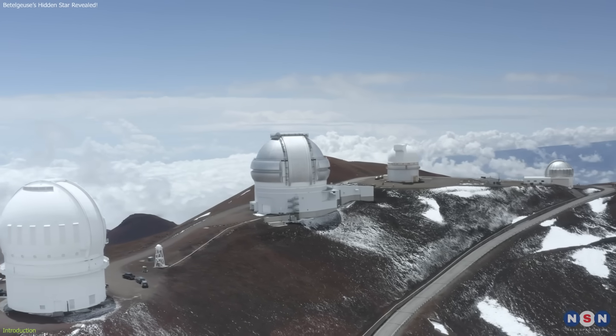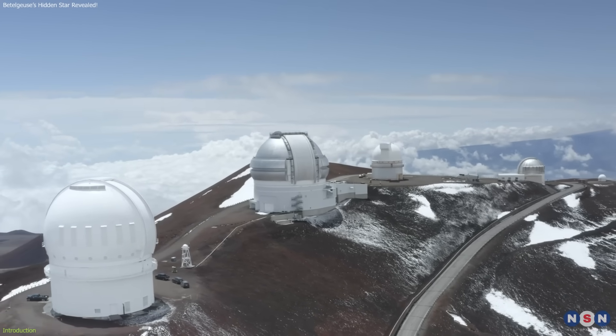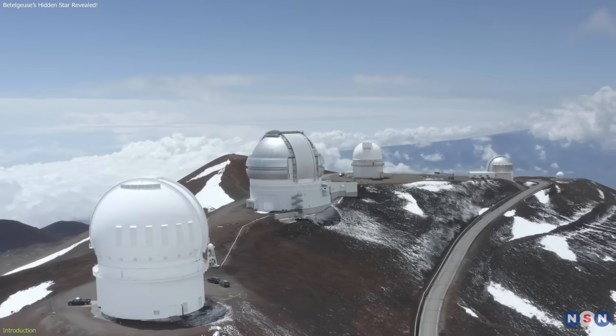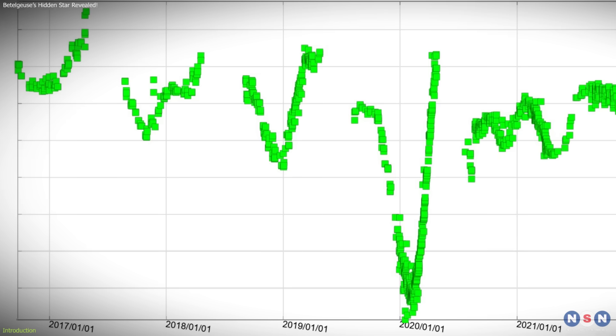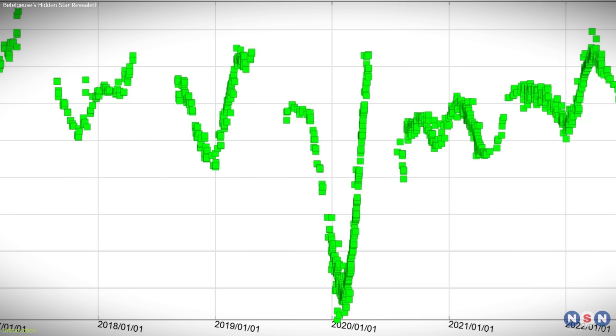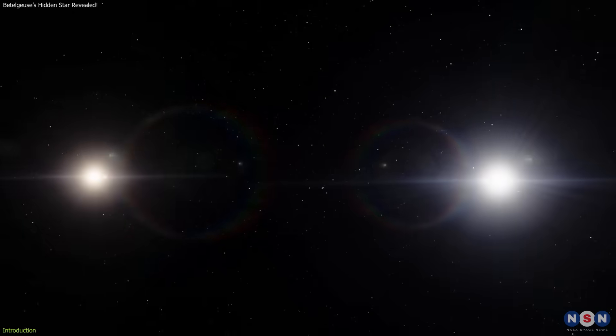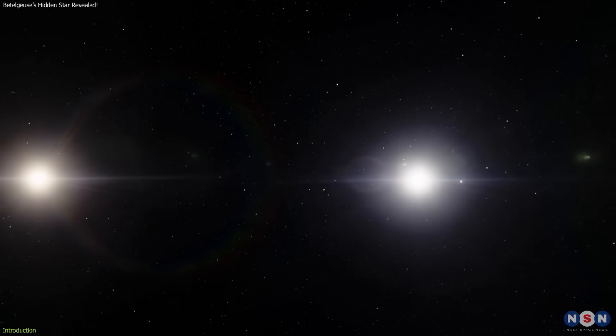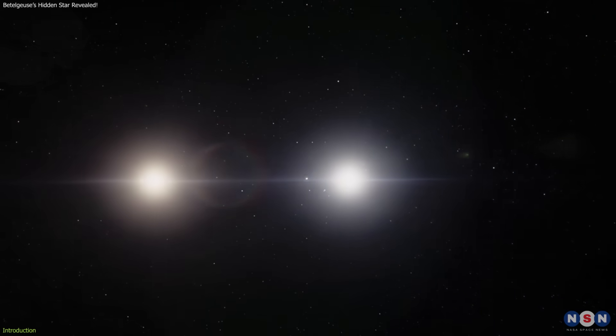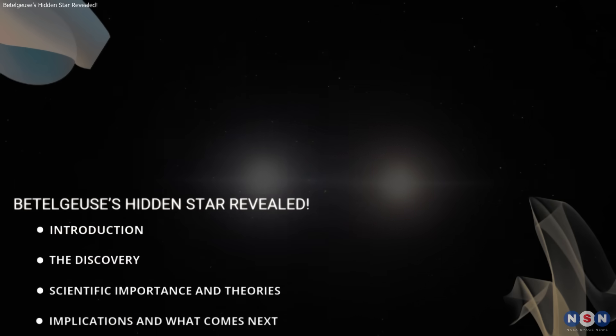In July, using the Gemini North Telescope in Hawaii with the Alopec Speckle Imager, a NASA-led team detected a faint star right where models predicted. This observation explains the strange brightness cycles. The evidence is not yet conclusive, but it's the strongest indication so far that it is part of a binary system. Keep watching to get the latest updates about this topic.